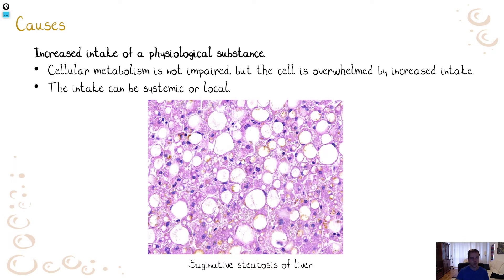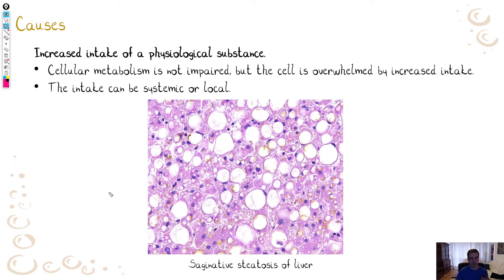What are the causes of dystrophy? First, it can be increased intake of a physiological substance. In this situation, there is nothing wrong with the cell — the cell is okay — but it is overwhelmed by the increased intake of a substance and simply cannot process it. The intake can be systemic or local. A typical example is alimentary steatosis of the liver. Steatosis means fat, fatty change, fat infiltration. So hepatocytes store fat for some reason, and 'alimentary' means it is caused by overeating or overfeeding.